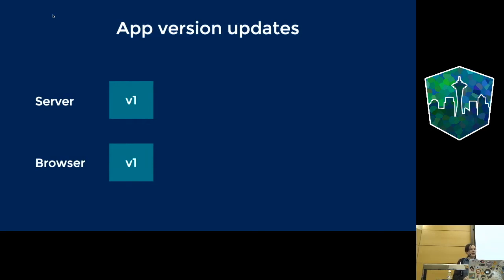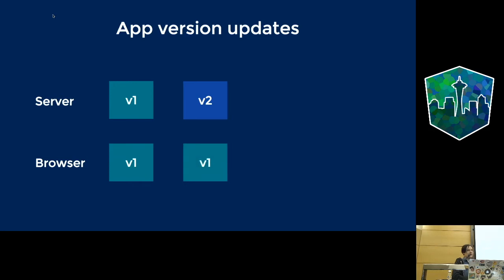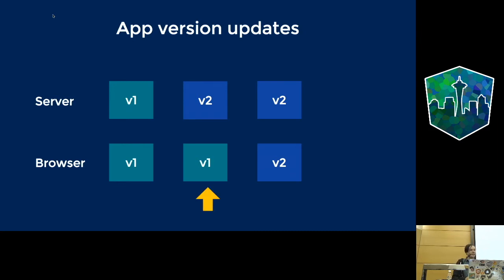For app shell versioning: imagine you create version 1 and deploy it. On first visit the browser shows version 1. Then you deploy version 2 — the browser still shows version 1 on the first visit, because it serves immediately from cache. Only on the second reload will it show the new version, because simultaneously it checks the network for updates and under the hood in the background updates the cache.